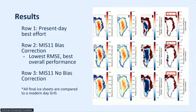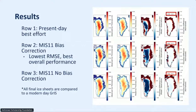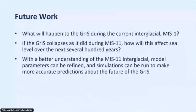For final results, the top row shows our present-day best effort run, the middle shows MIS-11 with bias correction, and the bottom shows MIS-11 without bias correction. One measure we use to indicate how well our models are performing is the RMSE value — in climate science we want that as low as possible. The middle row, with bias correction, has the best overall performance. For future work, we want to use this initial state spin-up to run full models of the entire MIS-11 duration to understand what will happen to the Greenland Ice Sheet during the current interglacial MIS-1, predicting what will happen for our children, grandchildren, and great-grandchildren.